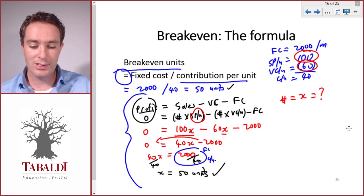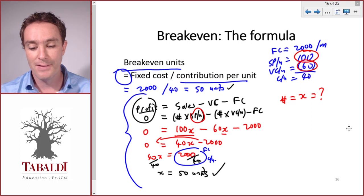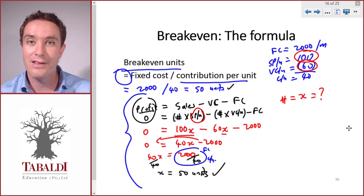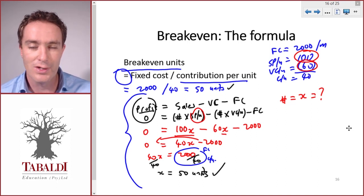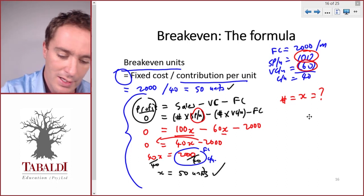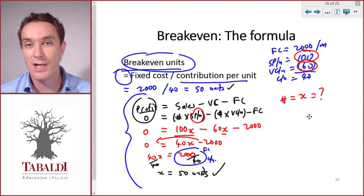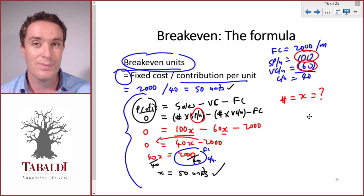The best approach when there's different methods to get to the same answer is to always do all the methods when you're practicing. In this case do both methods, the formula and the algebra, and see if you get the same answer. If you do not get the same answer you know there's something that's still not right in your understanding. It's fine to memorize the breakeven formula but also go and practice the algebra approach. It is a foolproof way to get any of the missing variables if they change up the question.